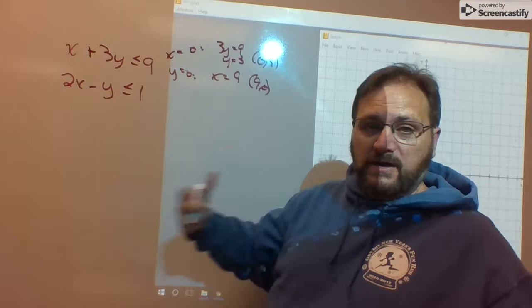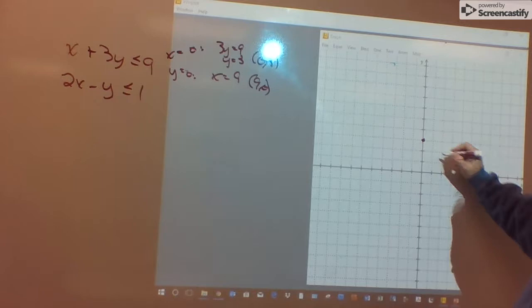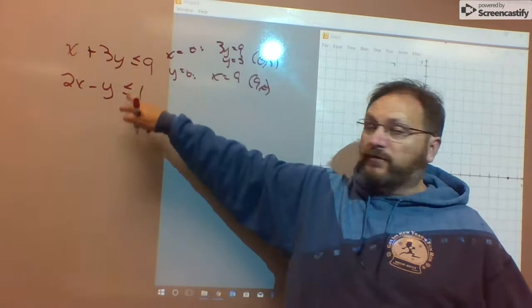Draw the line between them. 0, 3, 9, 0. Solid or dashed? Well, actually, both of our boundary lines are going to be solid.